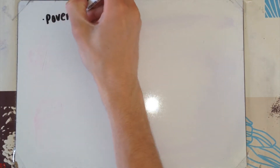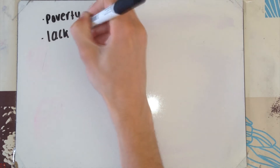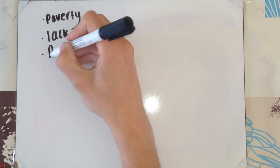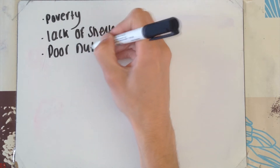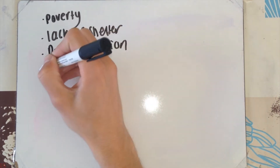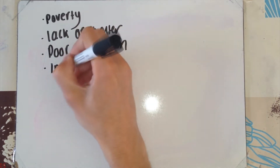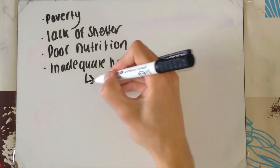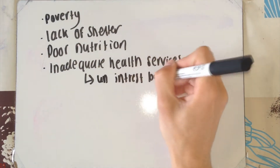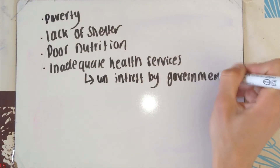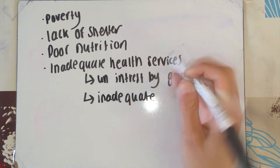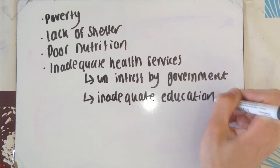You have poverty, which is typically associated with poor health and poor housing. Lack of shelter means you'll be exposed outside all the time with other people. Poor nutrition and a bad diet could weaken your immune system. Inadequate health services means the country you're in might not have the right equipment or staff to support your needs. This could be related to lack of government interest — the government might not be putting enough money or focus towards disease. Inadequate education means people are not educated enough on disease and do not take the right precautions to prevent them from getting these diseases.